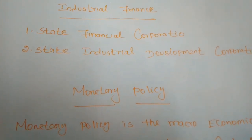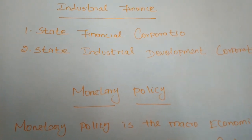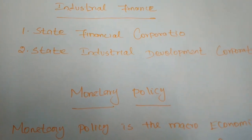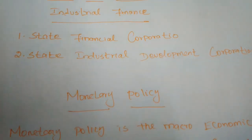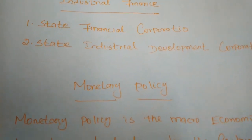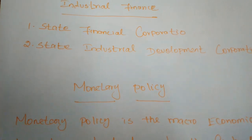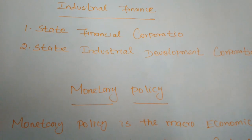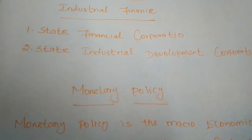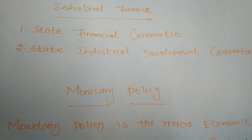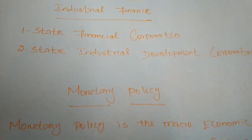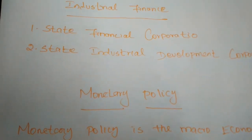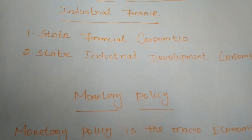The state financial corporations provide loans and underwriting assistance to industrial units having paid-up capital and reserves not exceeding 1 crore. Those small and medium scale industries in need of paid-up capital not exceeding 1 crore will receive loans and underwriting assistance. If any industrial unit needs underwriting assistance on the basis of banking guarantees, the state financial corporations will provide loans and underwriting assistance.